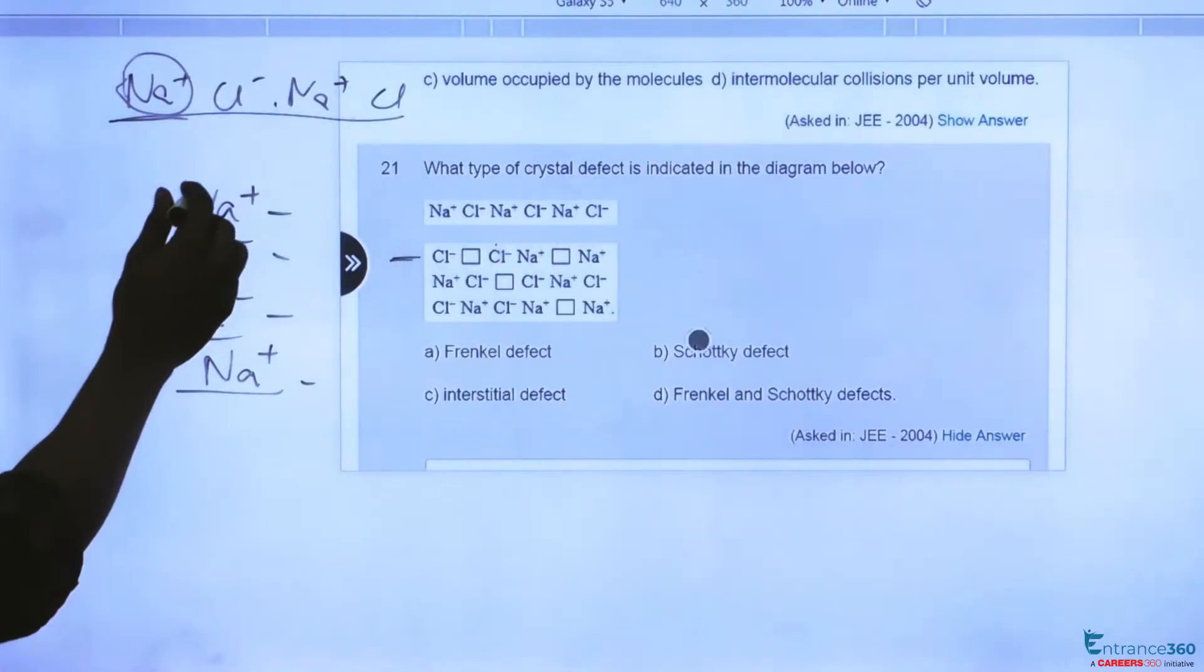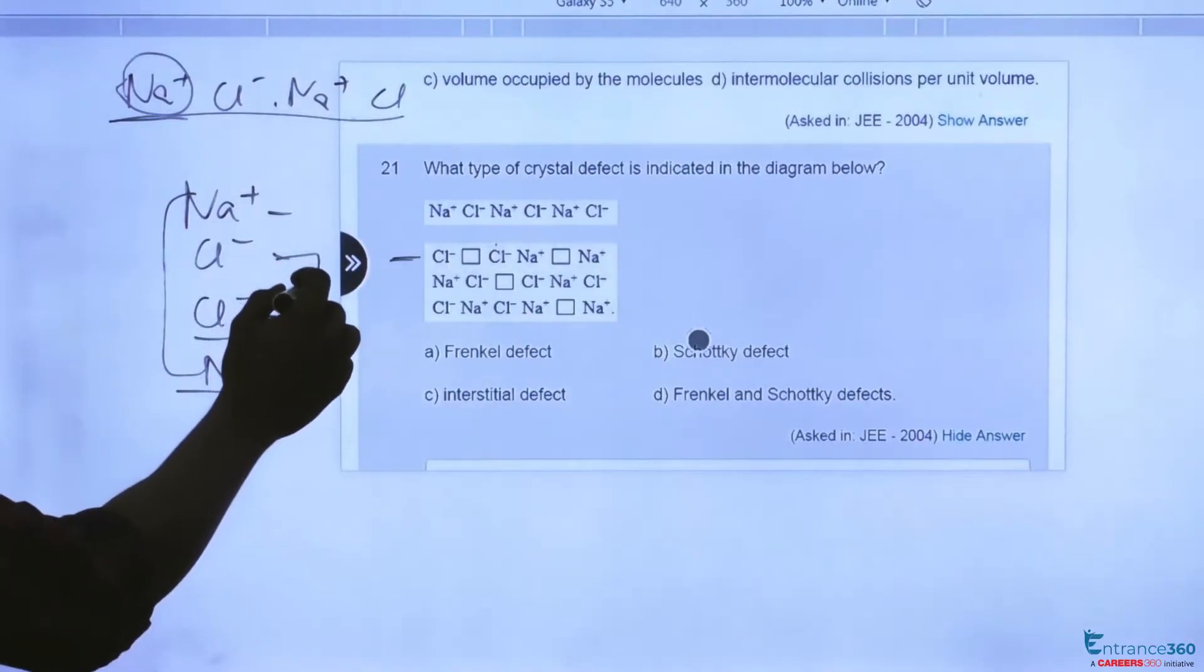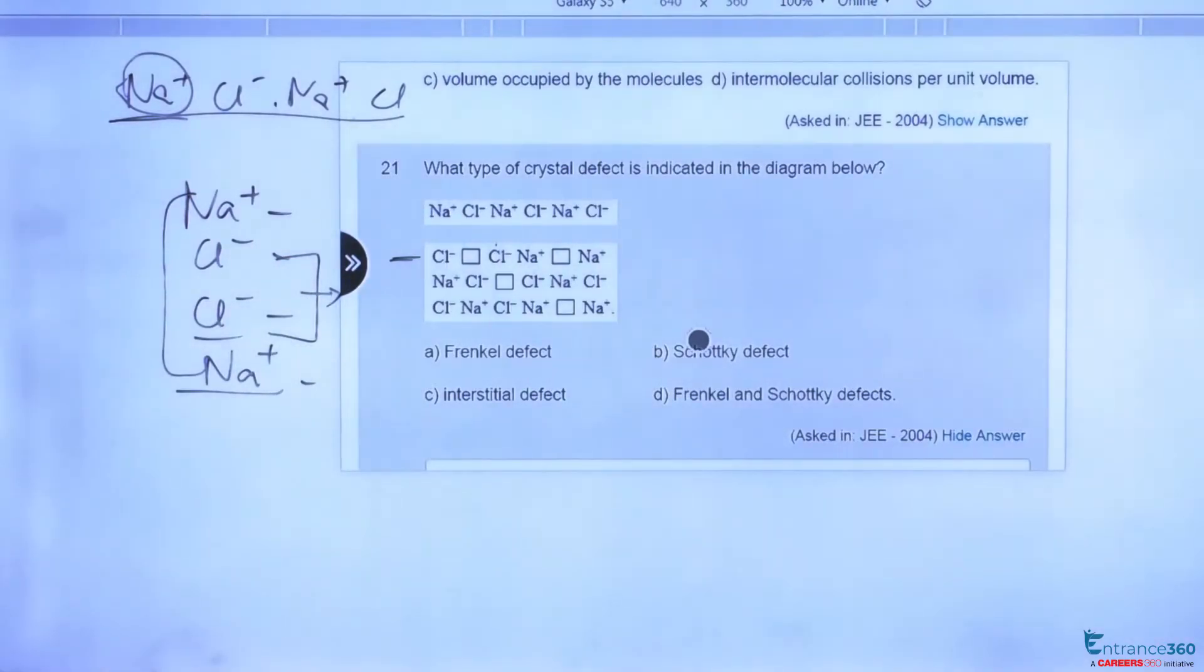As we can see, there are total two sodium plus atoms missing and there are a total number of two chlorine atoms missing.